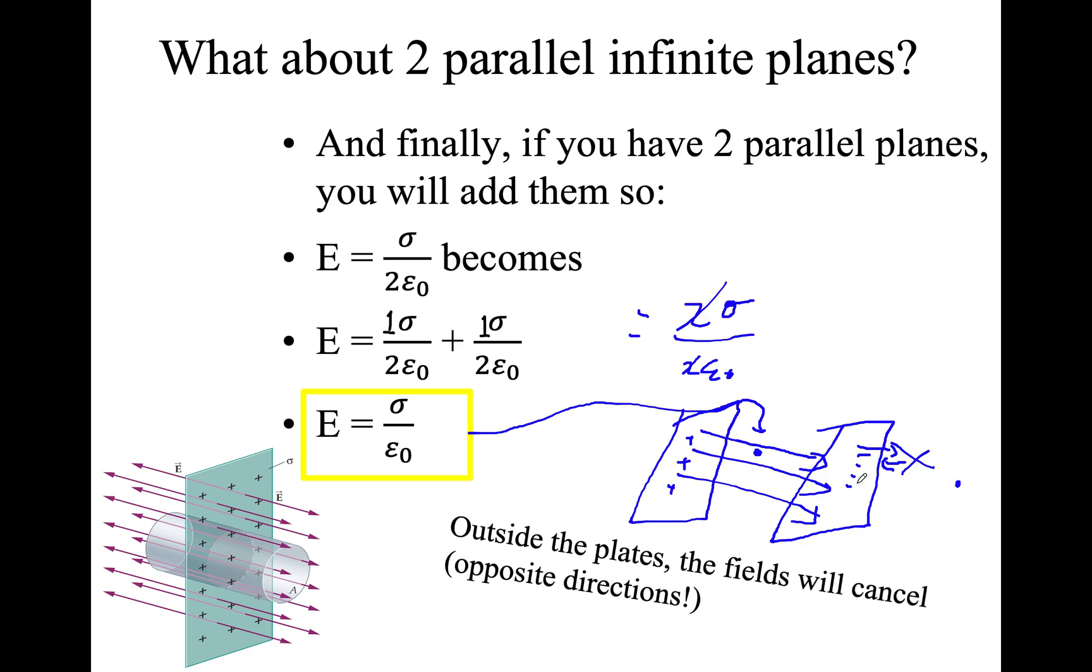Outside the fields will cancel. Out here we have a field line going this way. This is a negative plane, so that means we'll have a field line going in. So that means outside this will cancel each other out. So you don't need to worry about that. You just need to worry about any point in between.